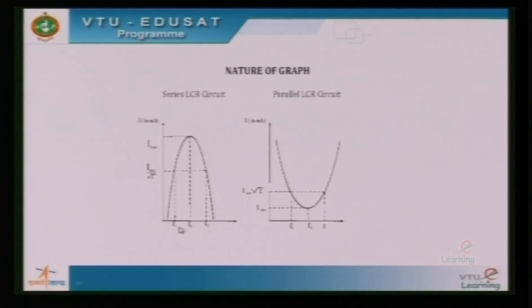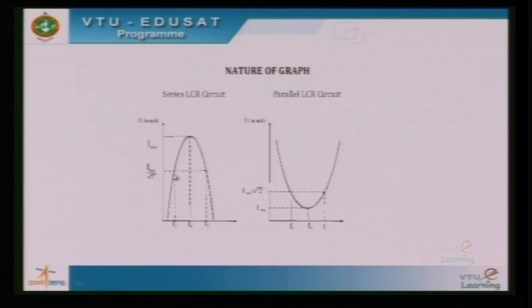The range of frequency is selected by drawing a line across the graph corresponding to I_max divided by √2. The two points on the x-axis are referred to as the cutoff frequencies. These are called cutoff frequencies because the power delivered to or from the circuit at these particular frequencies is exactly half. This is the range of frequency which can be selected by this particular circuit, and it is very useful because the power delivered is exactly half.